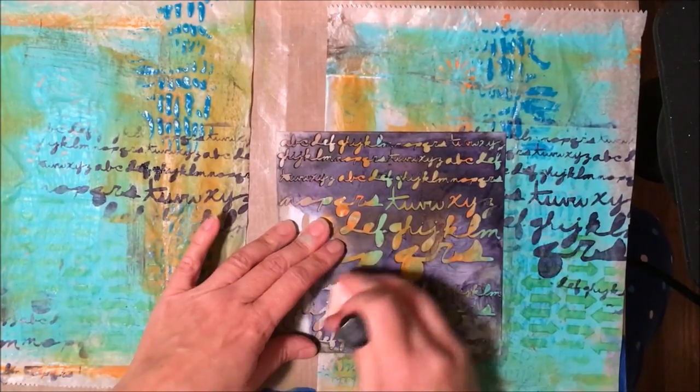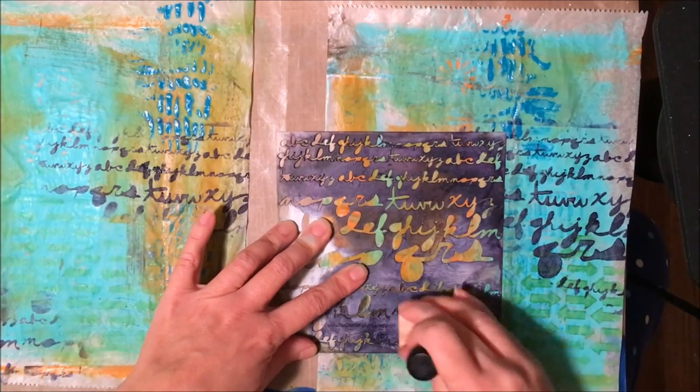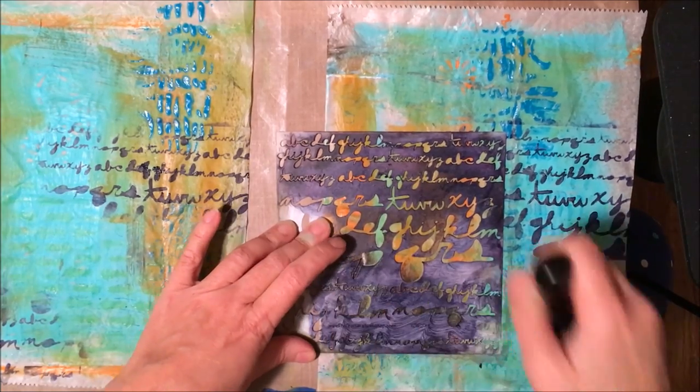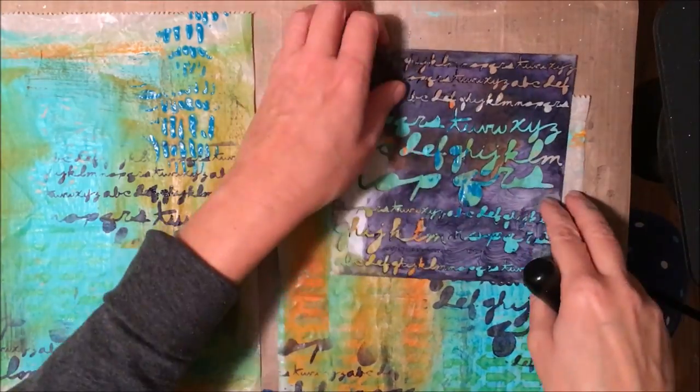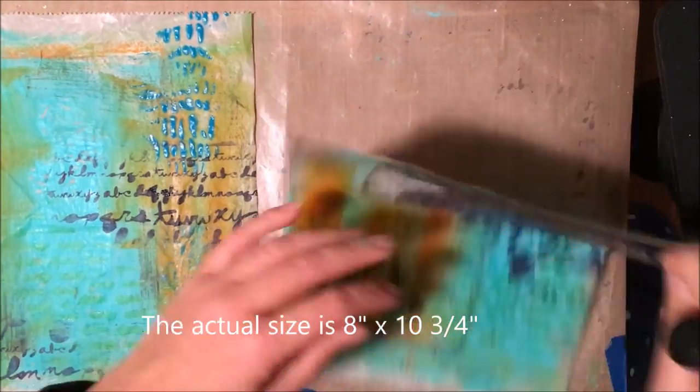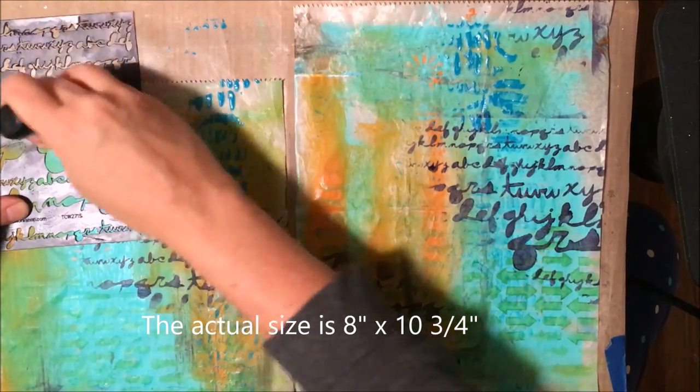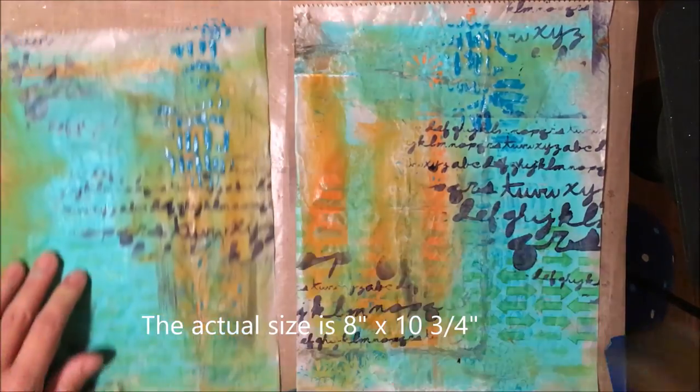And I'm just going to continue applying a little bit of the script around on those two pieces of deli paper. These deli papers are about eight and a half by eleven. Maybe a little smaller. No they're probably smaller than that. They're probably more like seven by four.